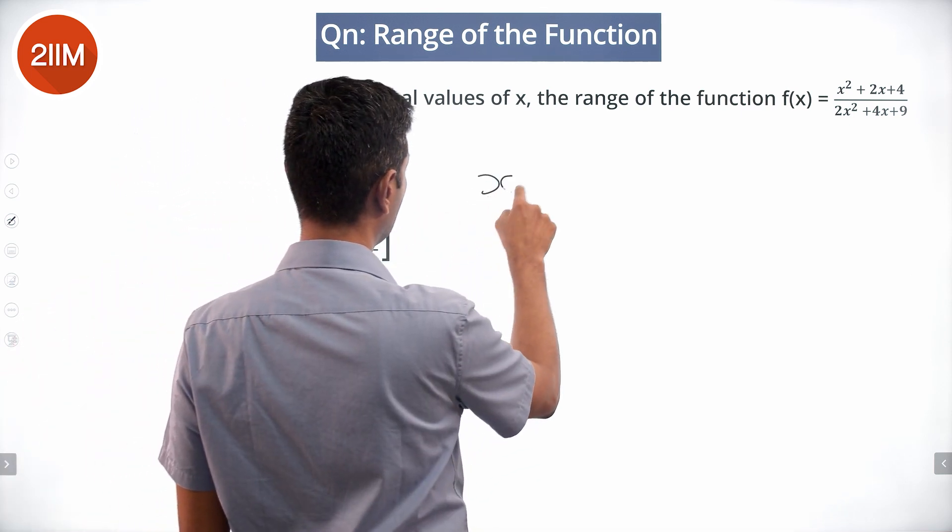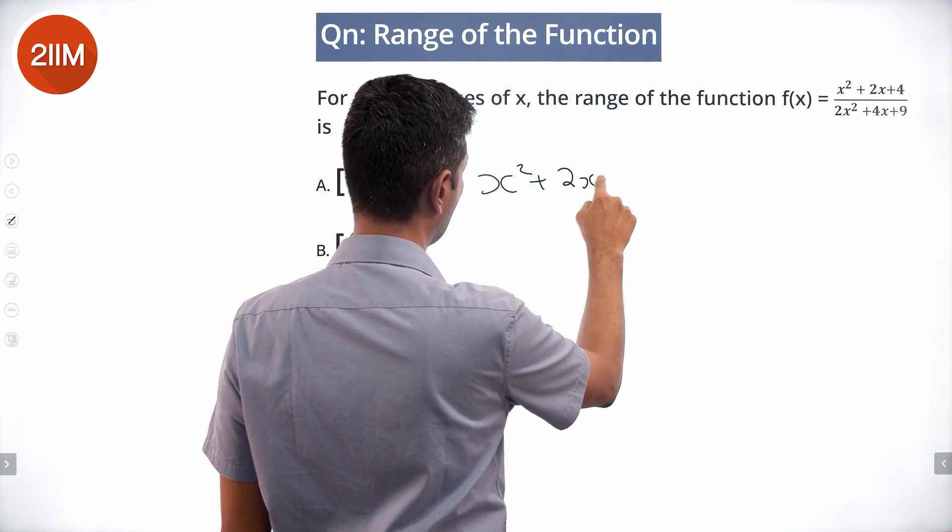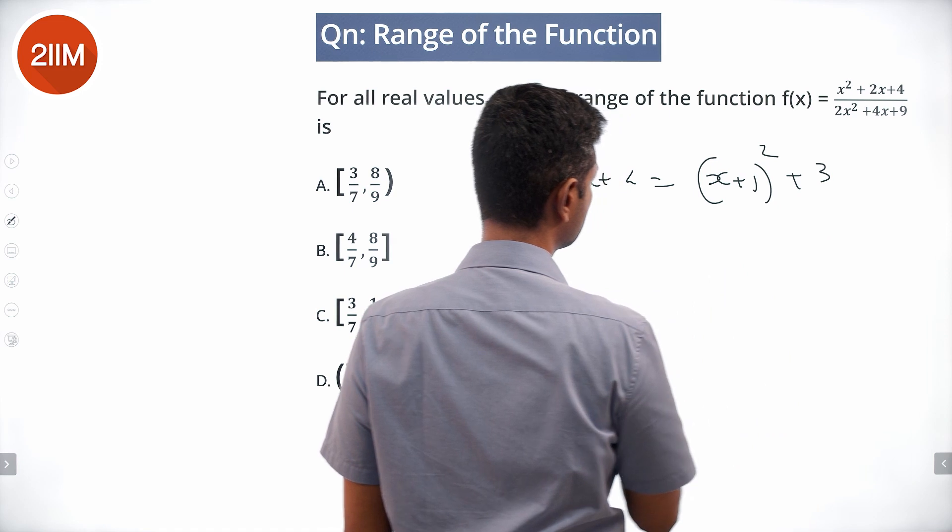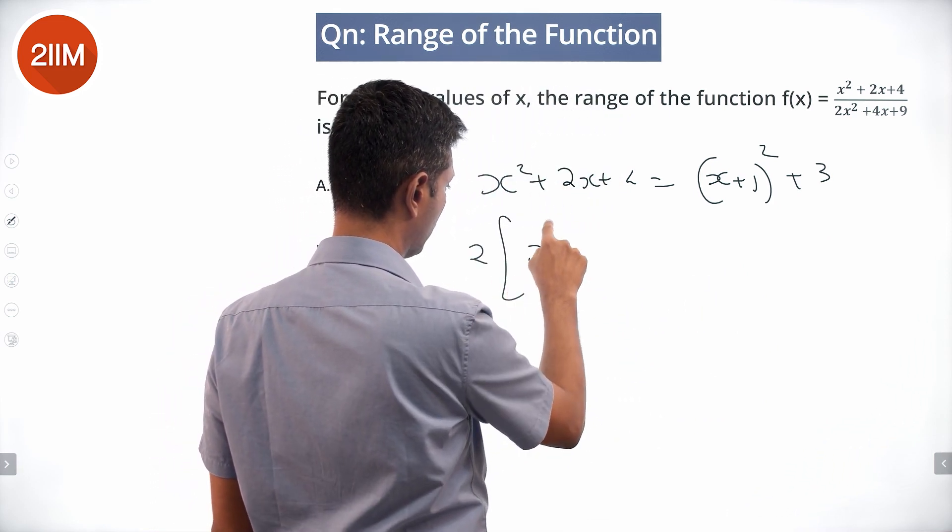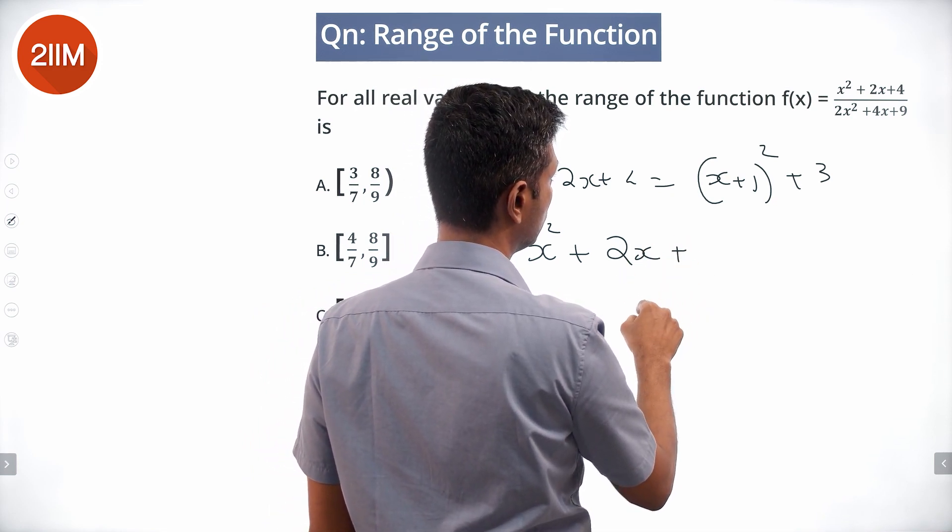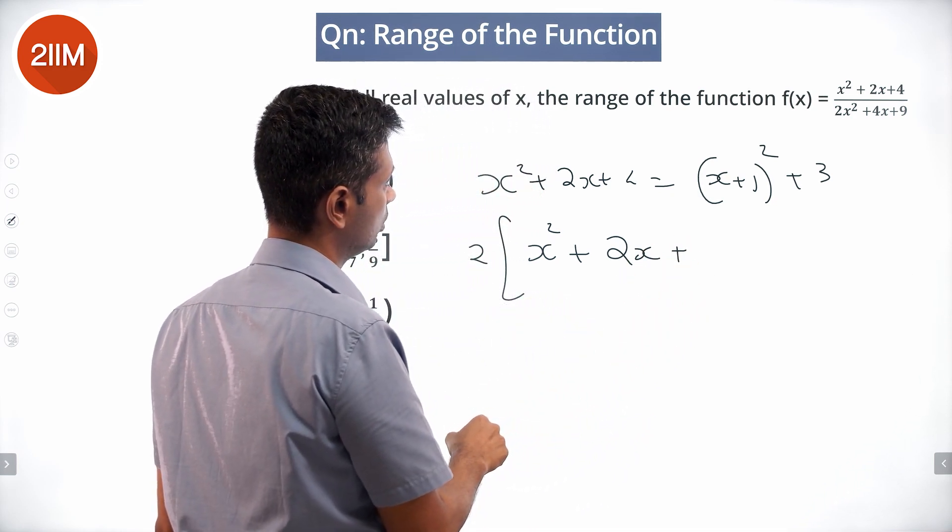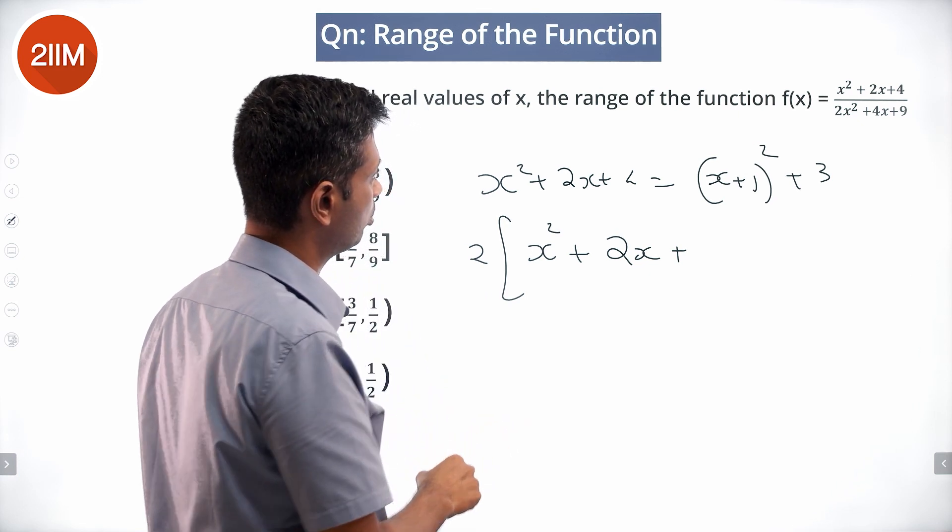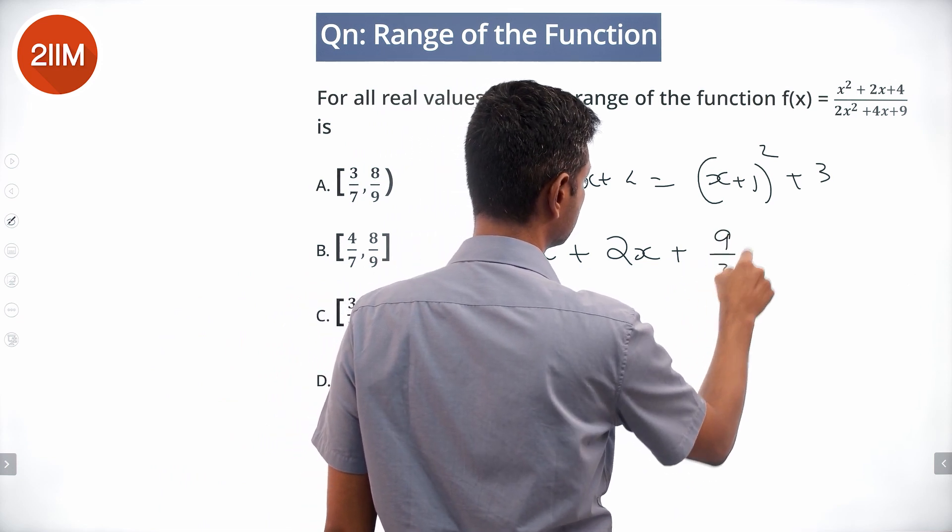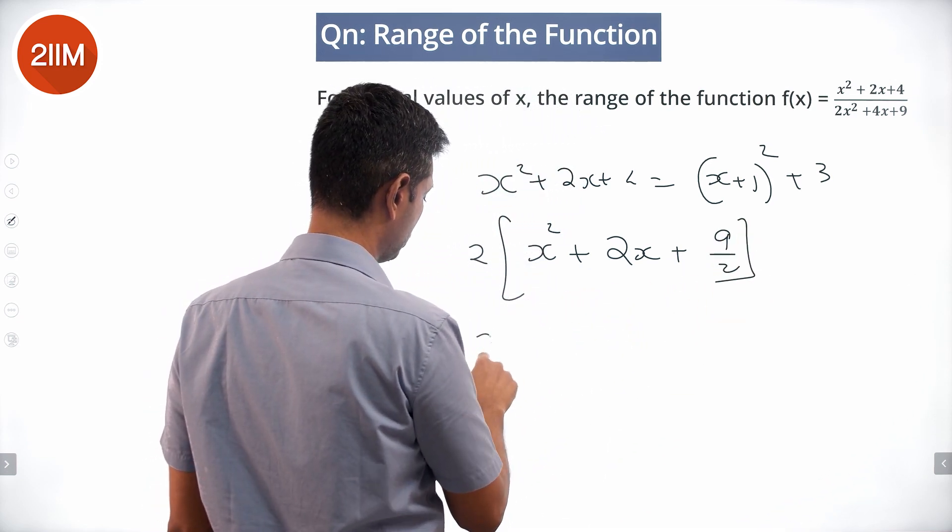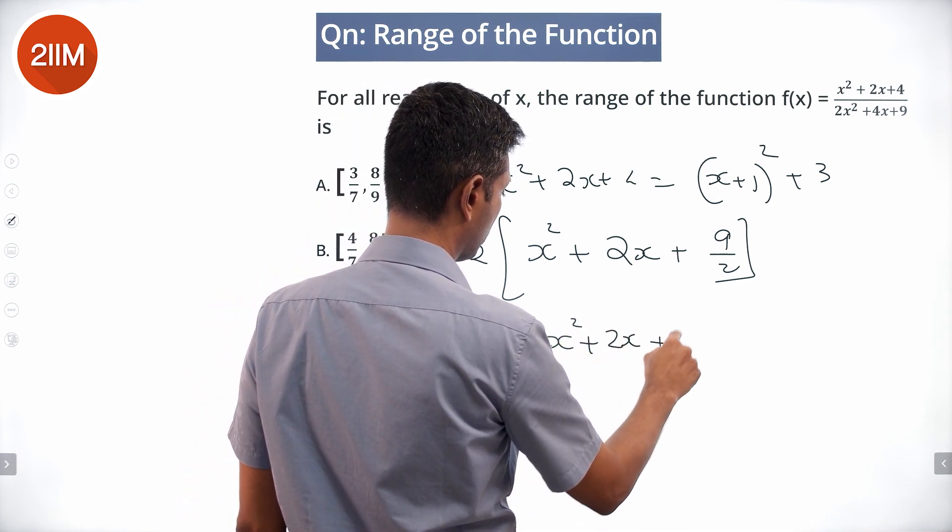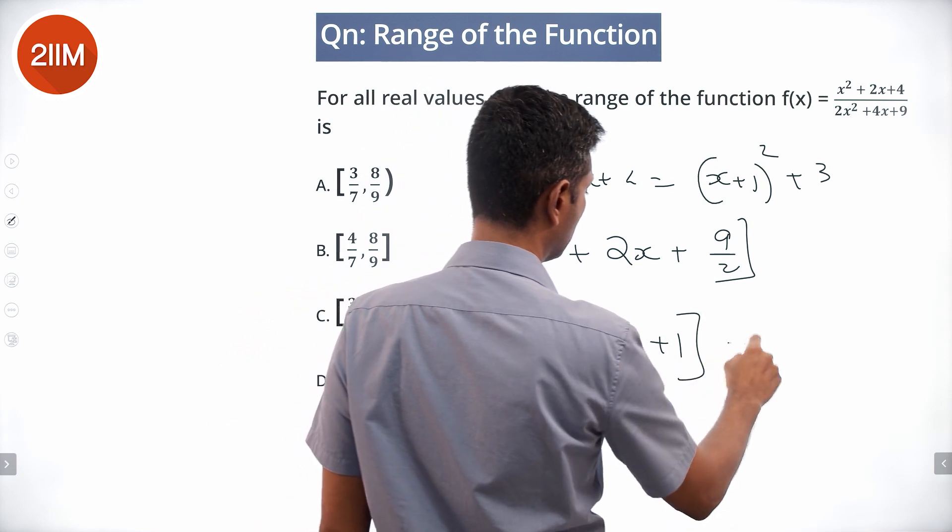x square plus 2x plus 4 is x plus 1 whole square plus 3. 2 times x square plus 2x, x square plus 4x plus 9 plus 9 by 2, or think of this as 2 times x square plus 2x plus 1 plus 7.